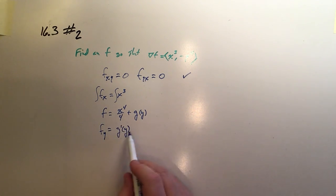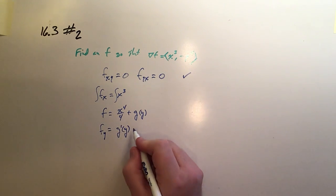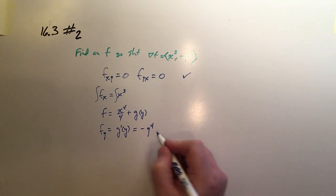And the good news is, I already know what the partial of f is with respect to y. It's sitting right here. So I just set that equal to -y^4.